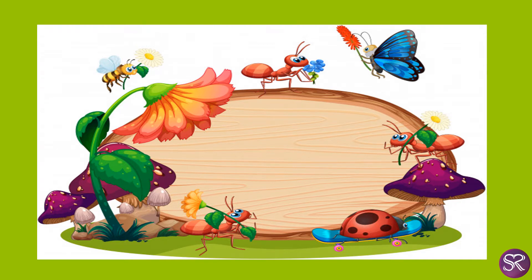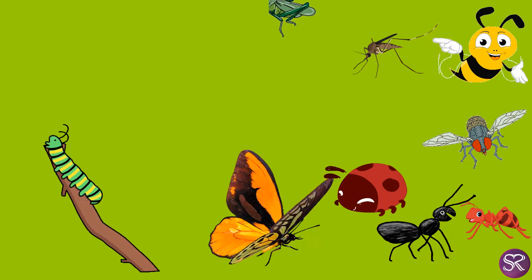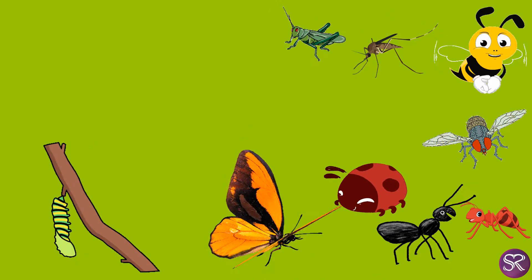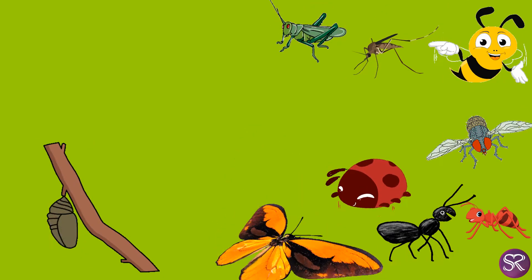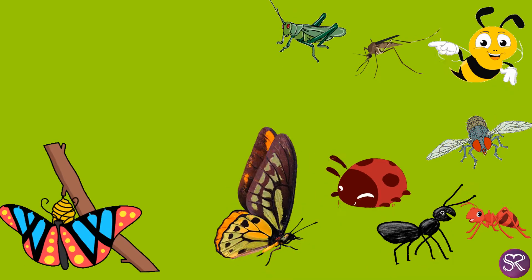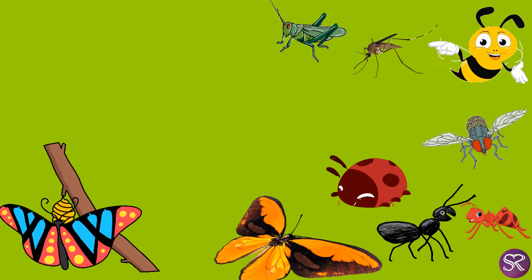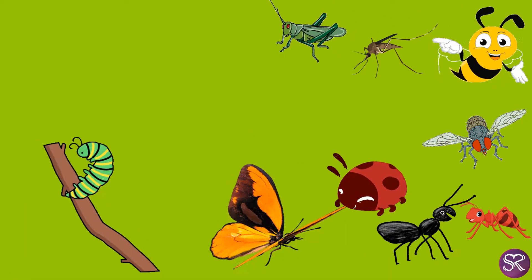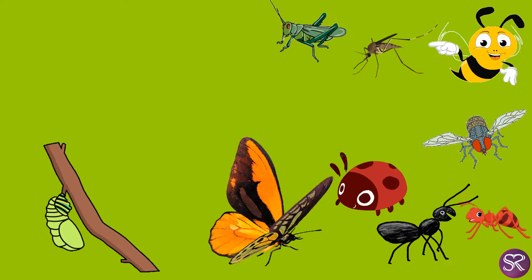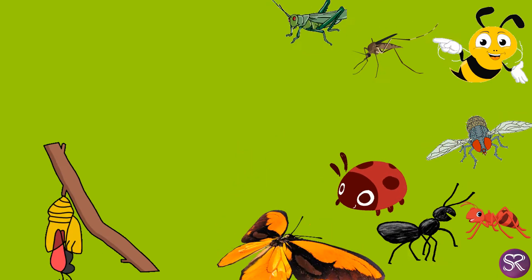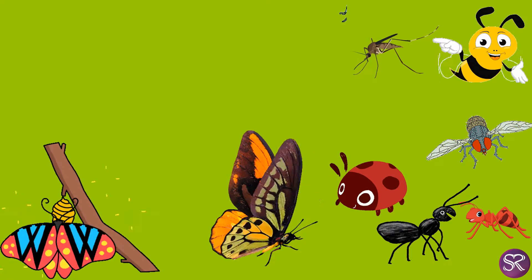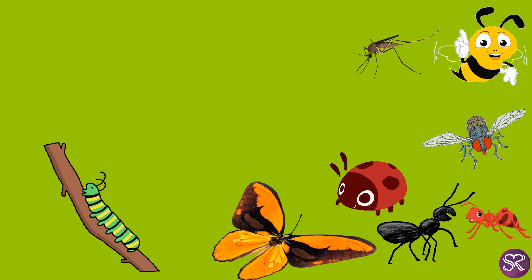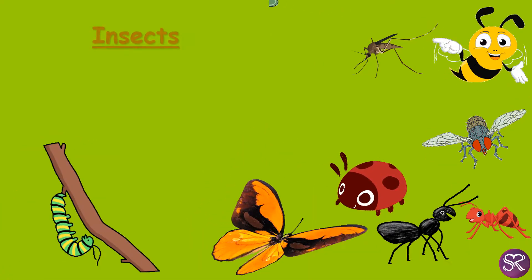Hello children, it's GK time. Let's see what we are going to learn today. Children, what are you able to see? They are small animals, tiny animals on the screen. Tiny means small. What are these small animals called? Do you know? Yes, they are called insects.